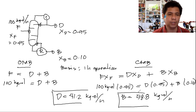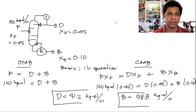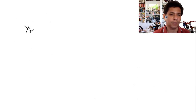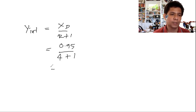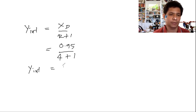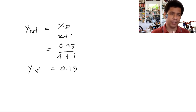For the graphical solution, calculate the y-intercept: x_d/(R+1) = 0.95/(4+1) = 0.19. The rectifying section operating line goes from the first point (0.95, 0.95) to the y-intercept 0.19 on the y-axis.